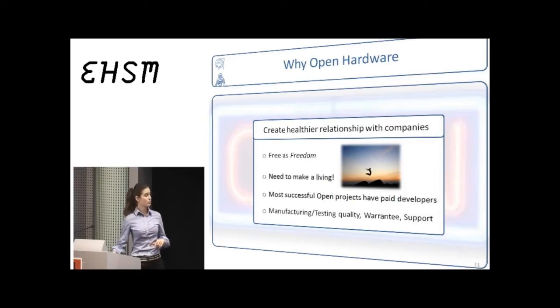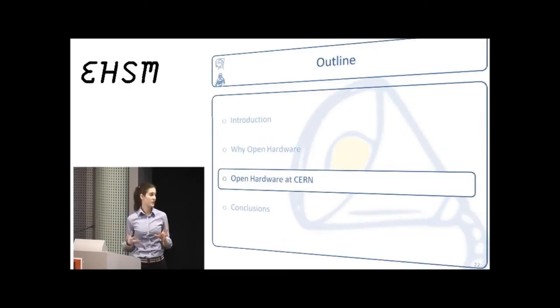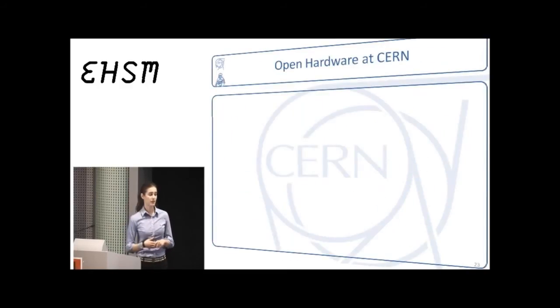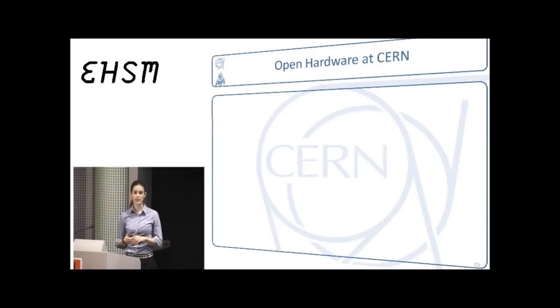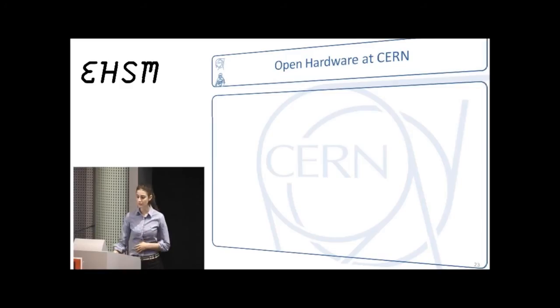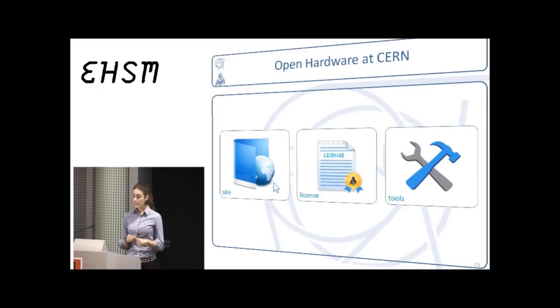A couple of years ago, CERN wanted to participate in this open hardware movement and profit from its advantages. It started from the section I'm working for, and then several other groups are also adopting our approach on their projects. We copied the software world, and we knew we had to follow three directions. First of all, we needed a web place that would house the designs, similarly to GitHub for software. Then we knew that we needed a license that would provide the legal frame, similarly to the GPL for the software world. And finally, we needed to make sure that the tools that are essential for designing hardware would also be freely and openly accessible, similarly to VI and the GCC compiler for software.